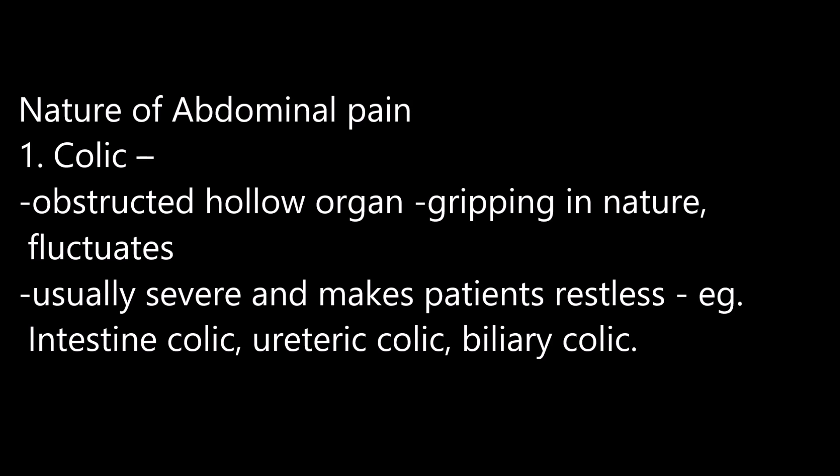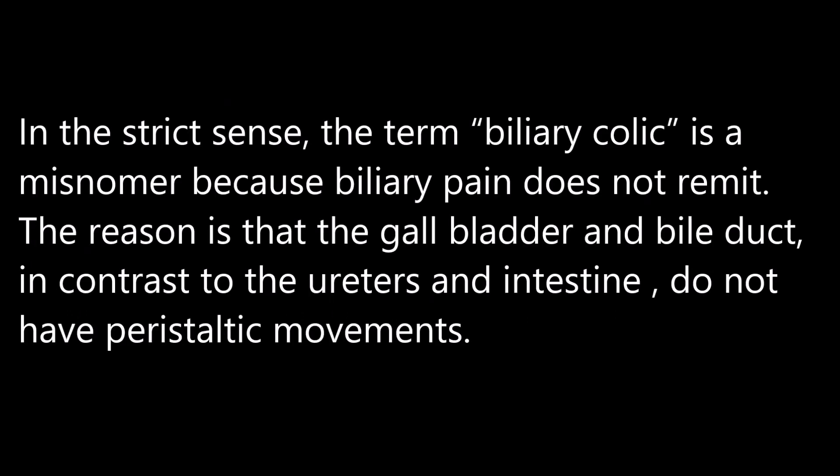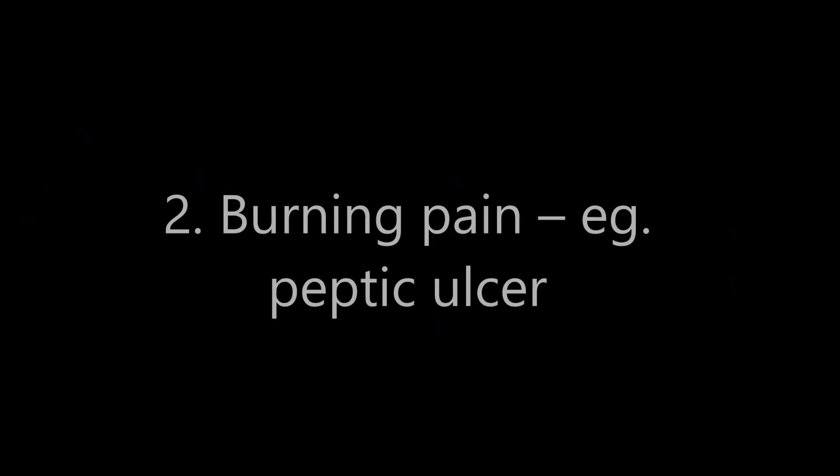The nature of abdominal pain — first is colic, which occurs due to muscular contraction of a hollow tube, caused by an obstructed hollow organ. It is creeping in nature, fluctuates, is usually severe, and makes the patient restless. Examples include intestinal colic, ureteric colic, or biliary colic. Note: biliary colic is a misnomer because biliary pain does not remit — the gallbladder and bile duct, unlike the ureter and intestine, do not have peristaltic movement. Second is burning pain, as seen in peptic ulcer disease.